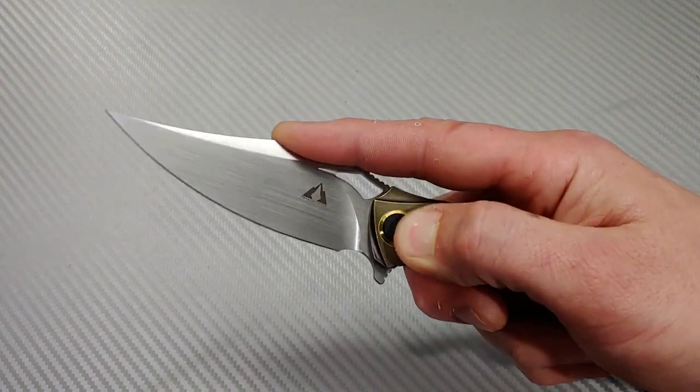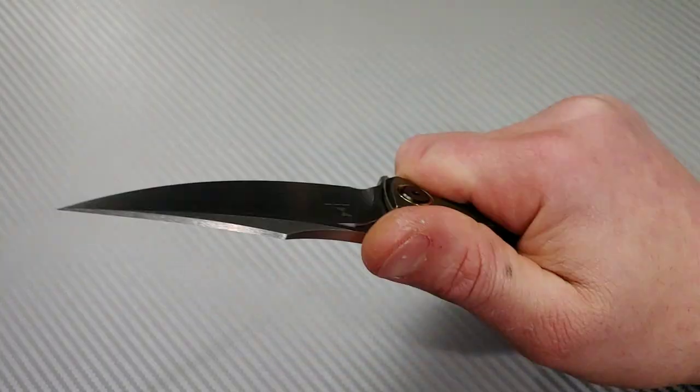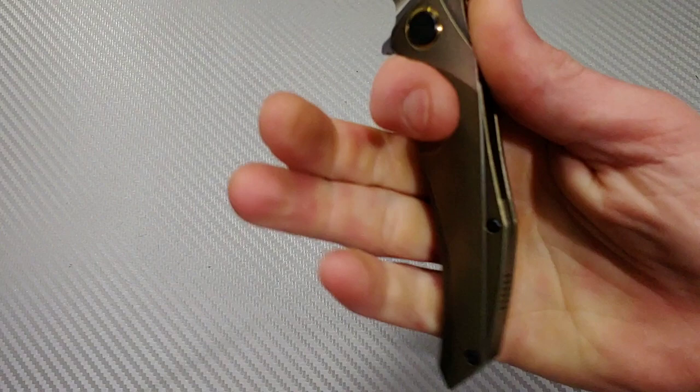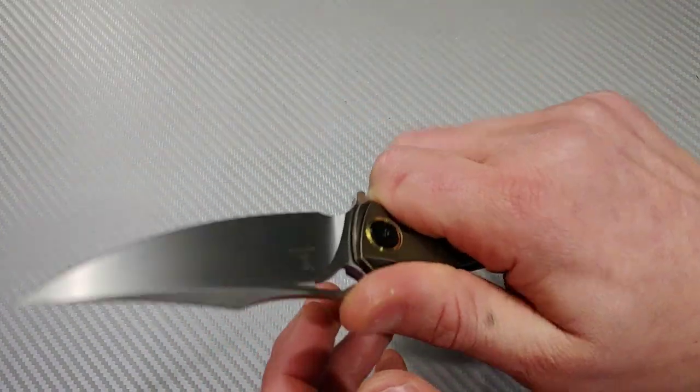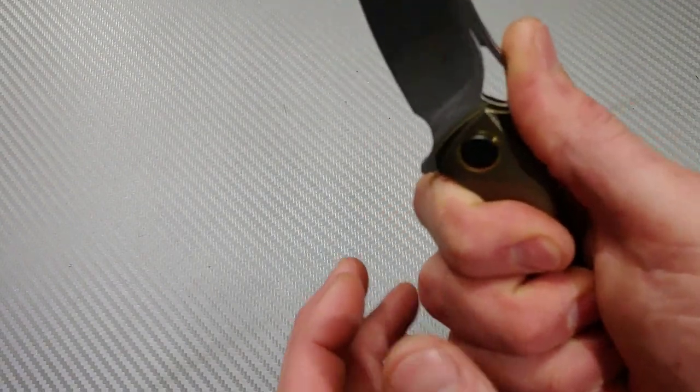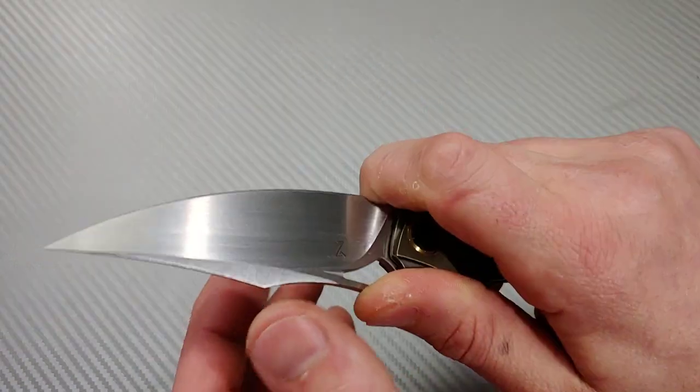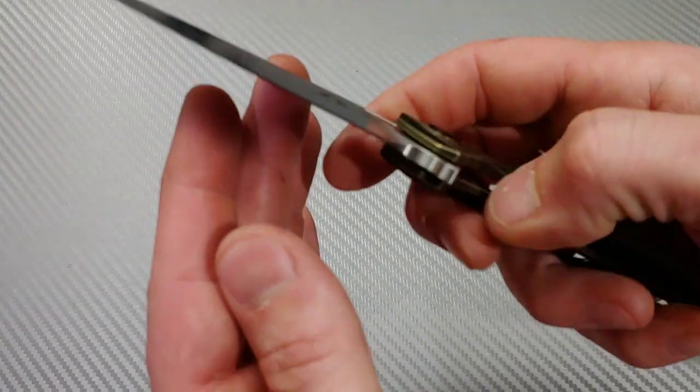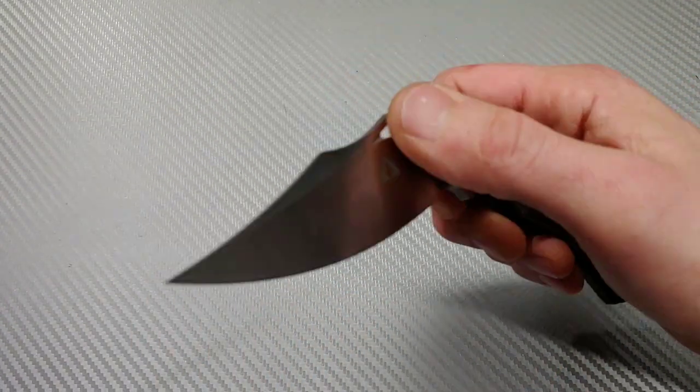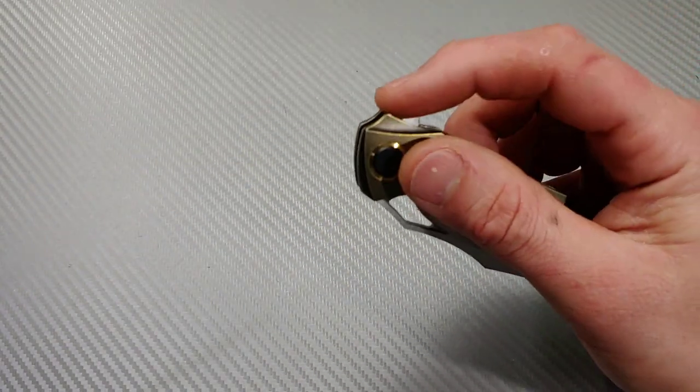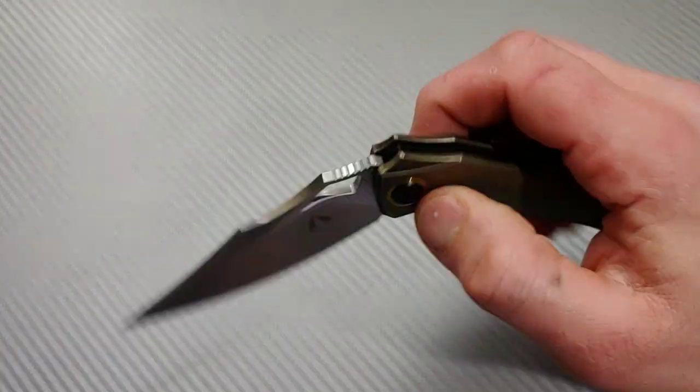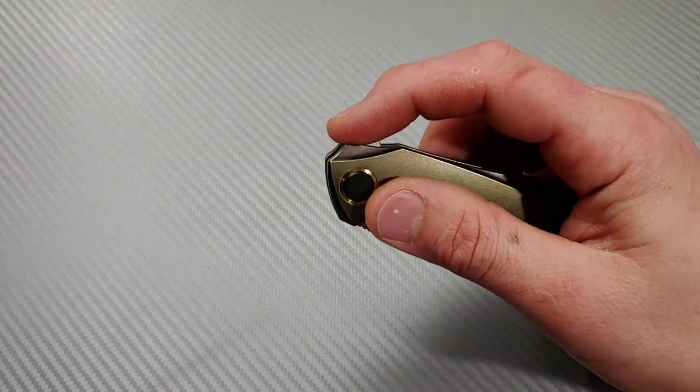This little thinner spot right here fits perfectly in my pinky, nice and comfortable. Small choil slash sharpening choil. The lock bar, oh yeah, feels very very nice. That was a light flip by the way.